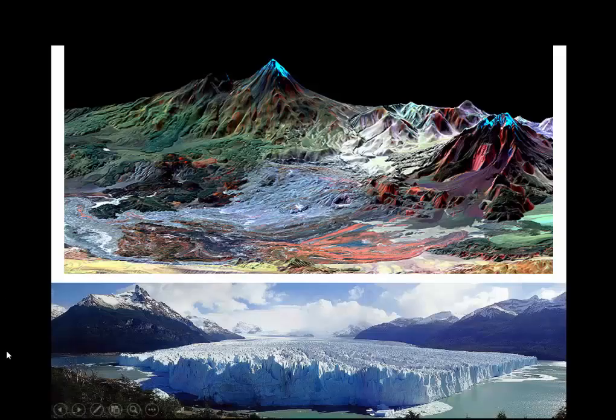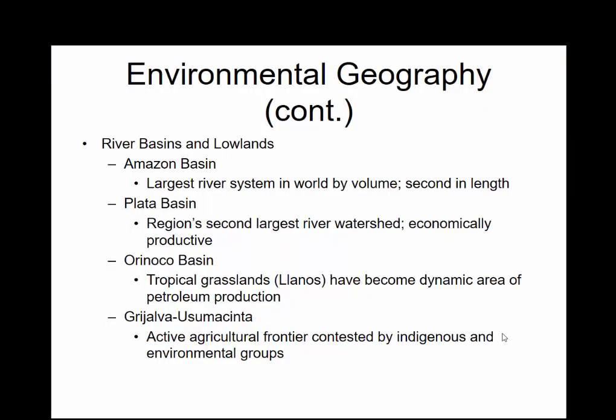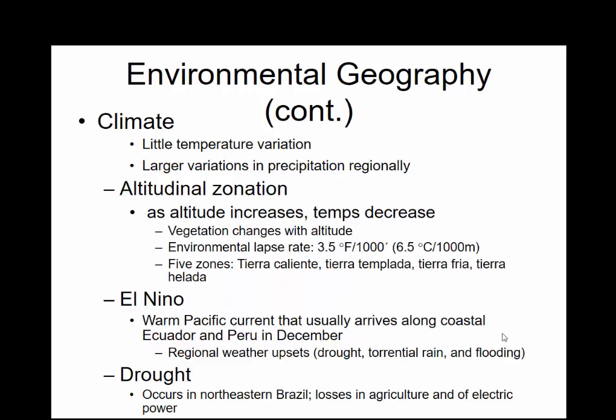Down in the far south, we have glaciers in what we call Tierra del Fuego, in Patagonia — a sparsely populated area in southern Argentina. We have places like the Orinoco in the northern part of South America, the Plata Basin, Rio de la Plata, and the Amazon — the largest river system by volume, but second in length to the Nile.